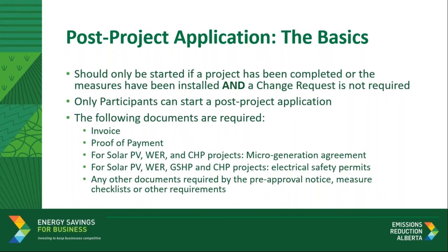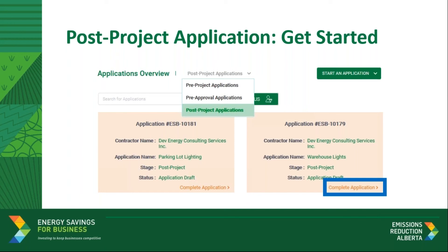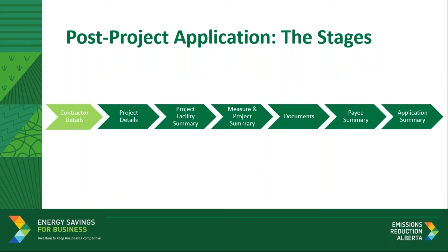We'll take a few minutes later on to discuss invoices and proof of payment. But first, let's take a look at the post-project application. To begin, the first step is for the participant to log into the program portal. Once they've signed in, they'll scroll down to the applications overview section of the homepage. Find the application associated with the completed project by using the filter tool to select post-project applications from the dropdown. Once you've located it, click on 'complete application' in the bottom right-hand corner to start the process. There are seven steps within this application, very similar to the steps in the pre-project application with only a few changes. The first step will require you to review contractor details, project details, project facility summary, then measure and project summaries. You'll then be able to add new documents, update the payee information, and lastly review the application summary before hitting submit.